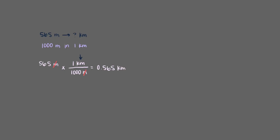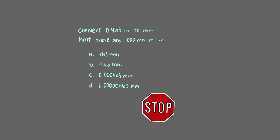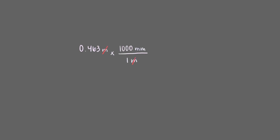Now you try one. Convert 0.463 meters into millimeters. Here's a hint to help you: there are 1,000 millimeters in 1 meter. That's right, 0.463 meters is equal to 463 millimeters. We start with 0.463 meters and we must use the ratio that lets us cancel out the meter units and leaves us with millimeters. Once we multiply everything out, we are left with 463 millimeters.